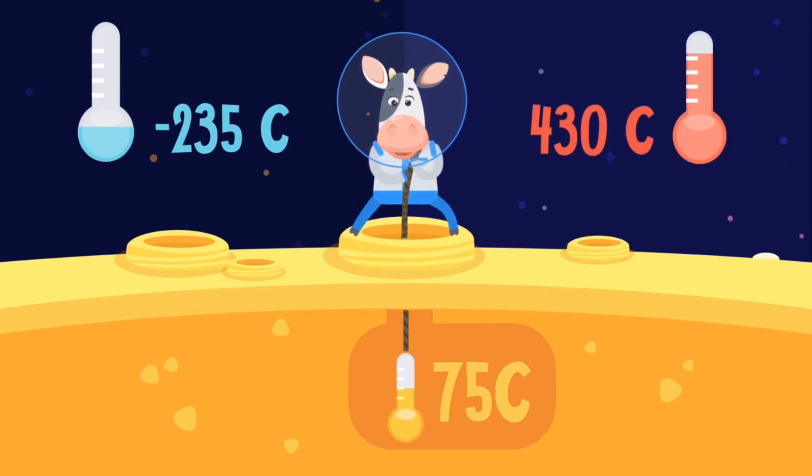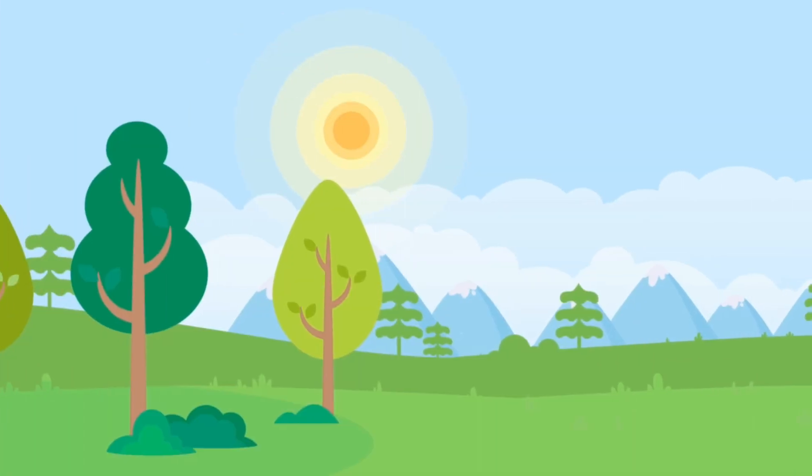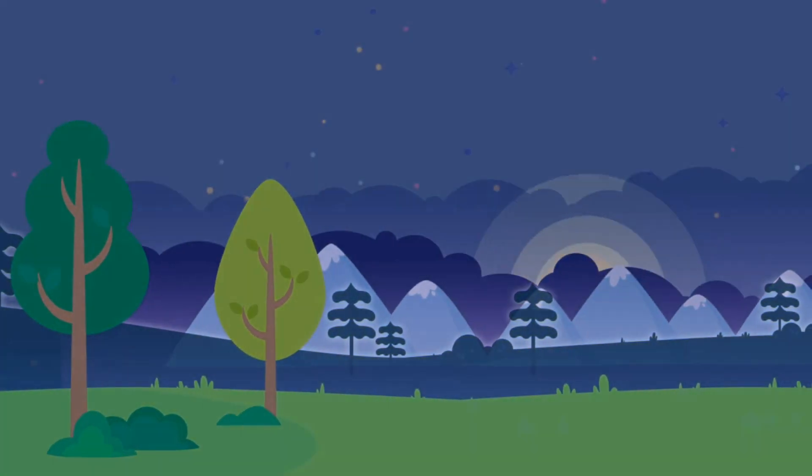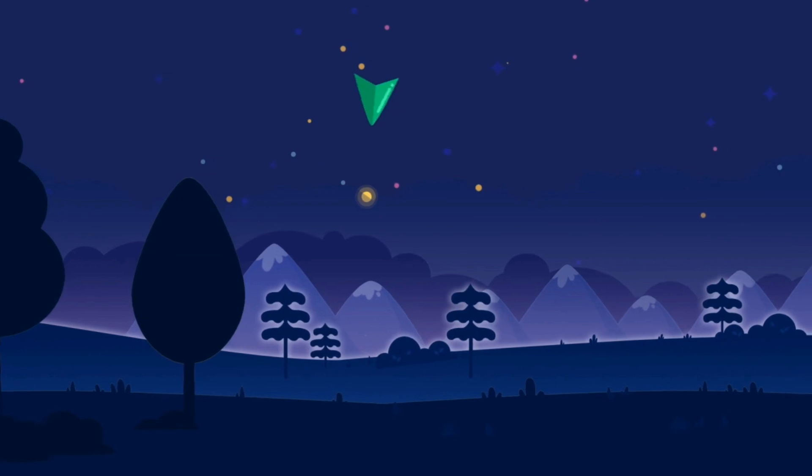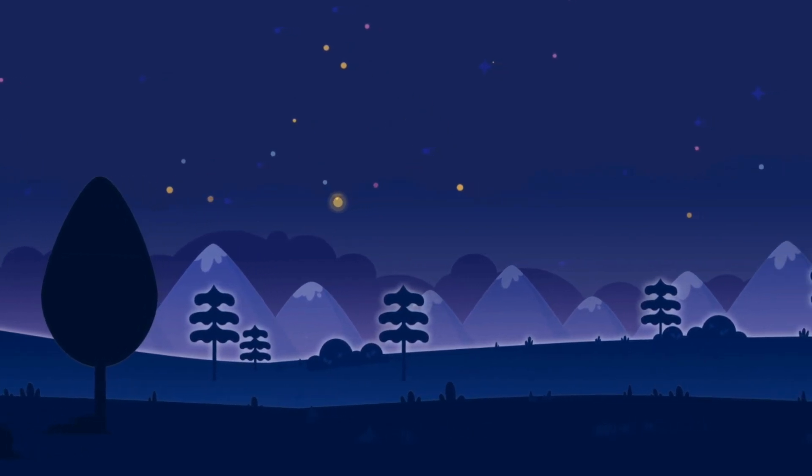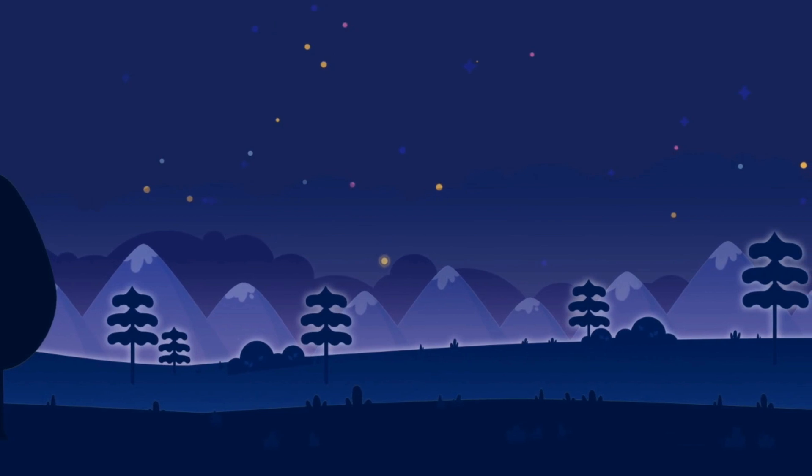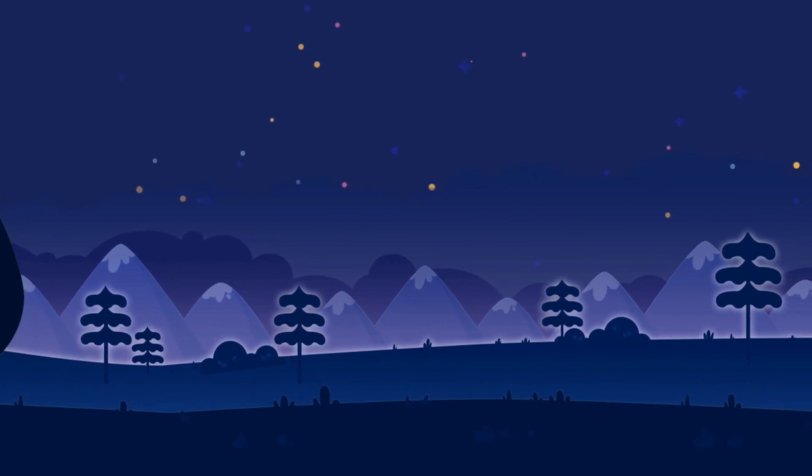The best time to see Mercury is in the evening, when it is just above the horizon. At this time, it shines brighter than all the stars in the sky, but soon disappears following the Sun.